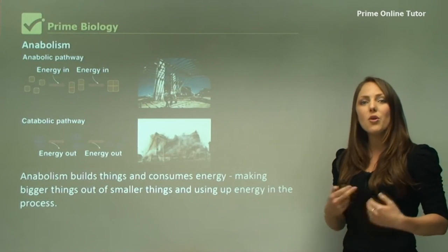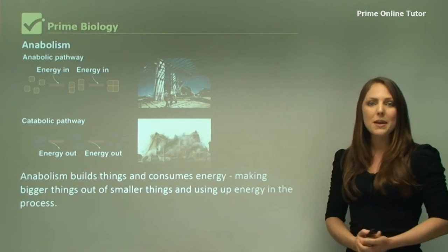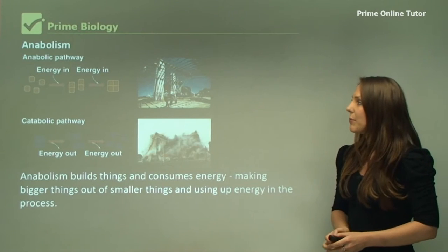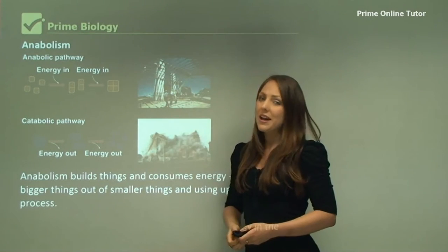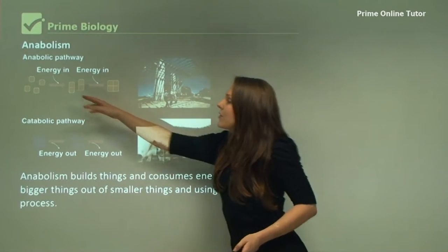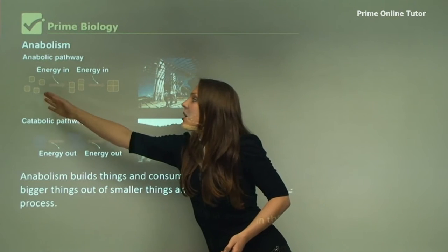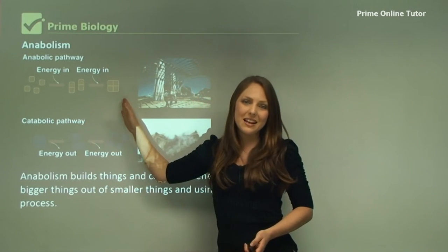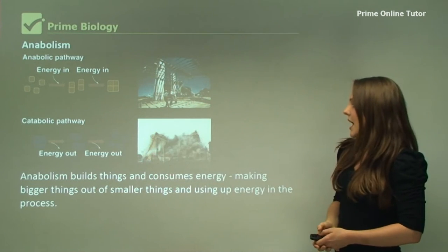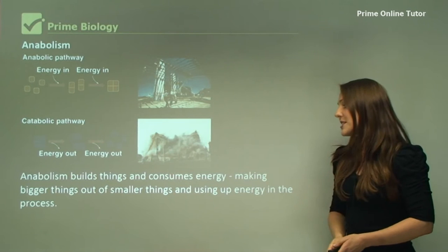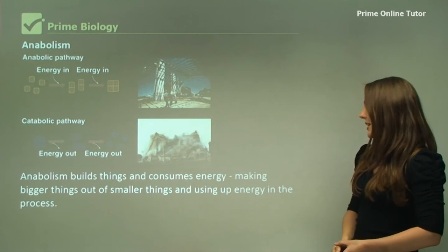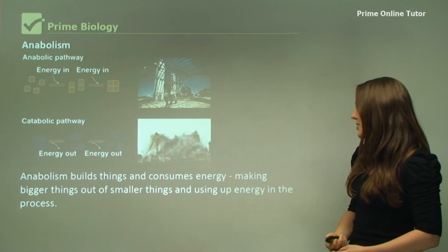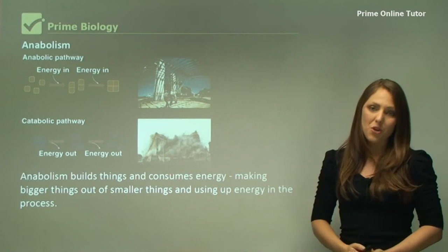Going more into anabolism examples — as you can see with this diagram, you can see an anabolic pathway. We have smaller substances here which actually build up into a larger substance. Anabolism builds things and consumes energy, making bigger things out of smaller things and using up energy in the process.